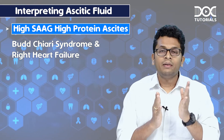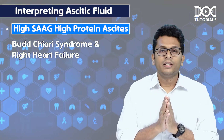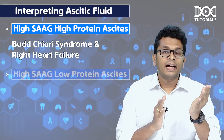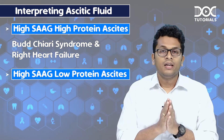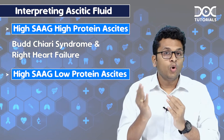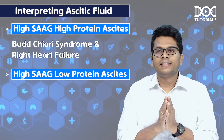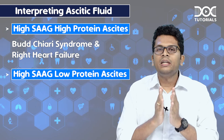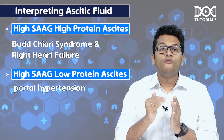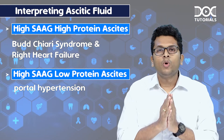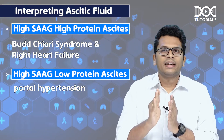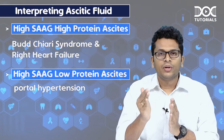The second type is high SAAG, low protein ascites, which is generally because of portal hypertension, most likely secondary to cirrhosis.